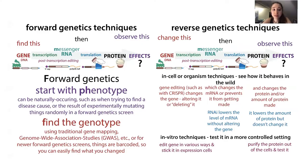So remember: forward starts with phenotype — forward phenotype. A way to also remember this is that forward genetics is kind of more of the classical genetics. When you think about all those experiments with fruit flies, trying to isolate flies with weird phenotypes — flies that were wandering around strangely or had strange eye colors — and then looking to see what was the genetic cause of that.